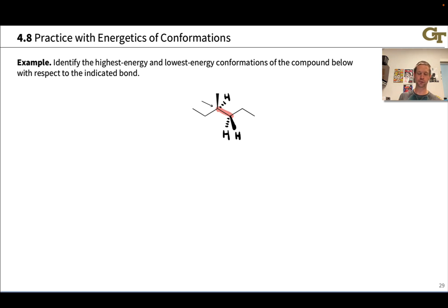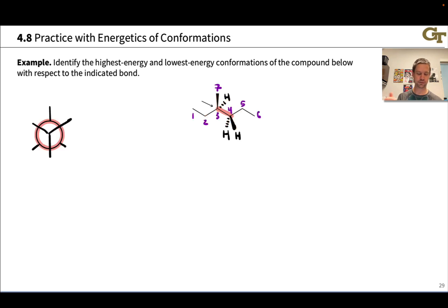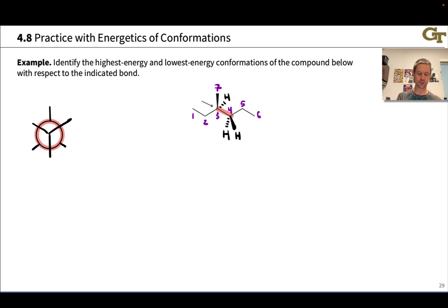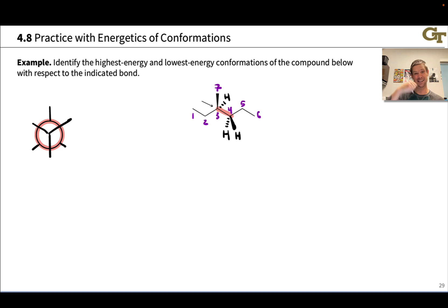We're going to walk through all of the staggered and eclipsed conformations of this compound with respect to rotation around the indicated bond and identify the global energy maximum and minimum, pointing out torsional strains and steric interactions between groups larger than hydrogen. Let's start by drawing a Newman projection for this molecule. We'd see a right-side-up Y shape on the front carbon and an upside-down Y on the back carbon. It's also a good idea to number the carbons to keep track of what's in the front and back as we rotate. I've numbered the six-carbon backbone one through six and the methyl carbon as carbon seven.